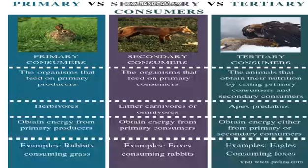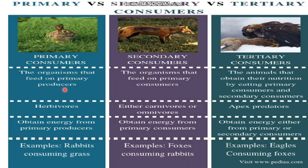Let's look at the difference between primary, secondary, and tertiary consumers. Primary consumers are the organisms that feed on primary producers — the plants. They are herbivores. Secondary consumers feed on these primary consumers, so they feed on herbivores. Tertiary consumers obtain their nutrition by eating primary consumers or secondary consumers — they can eat both. Primary consumers are herbivores, secondary consumers can be carnivores or omnivores, and the tertiary consumers are known as apex predators.